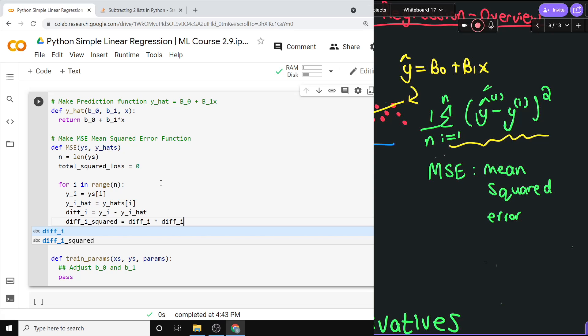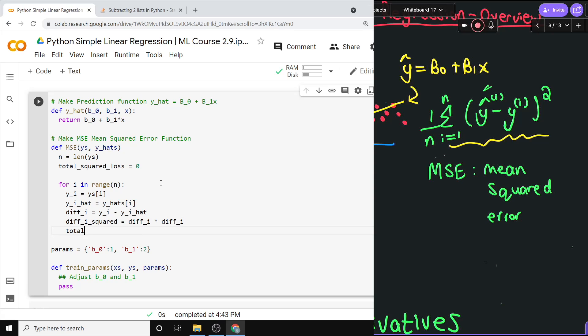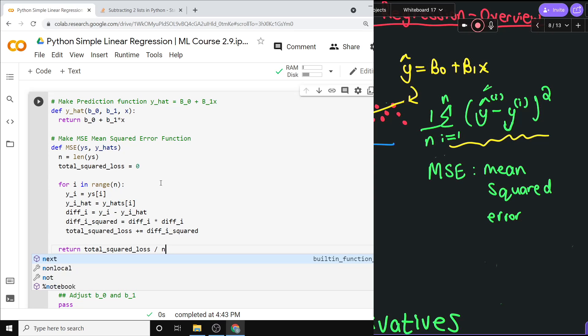So then that's the value that we need to sum up. So then we can just do, at the end here, total squared loss plus equals, so add whatever we got to it. First it's 0, but then we're going to accumulate this thing. Diff i squared. Okay, so then by the end of this loop, we've gotten everything. We added up all the differences, and to get the MSE, we simply need to return the total squared loss divided by n. And that is it. That is your mean squared error function.